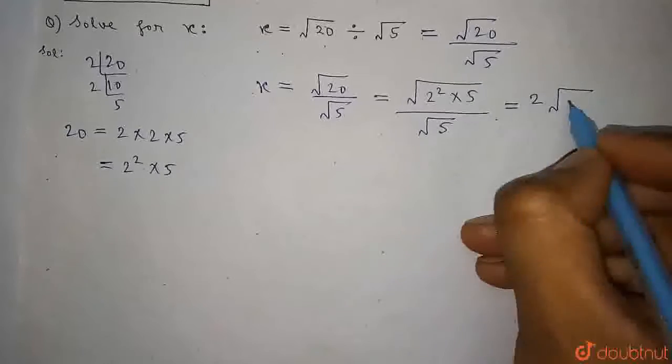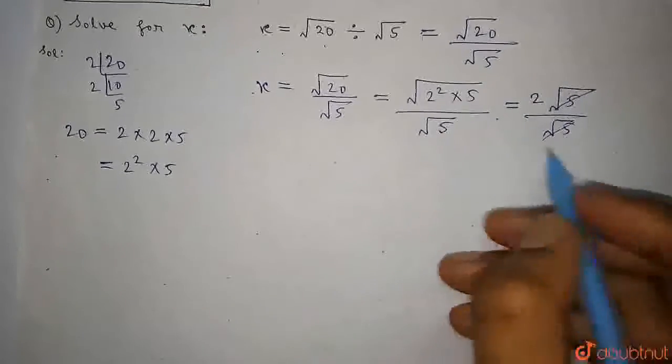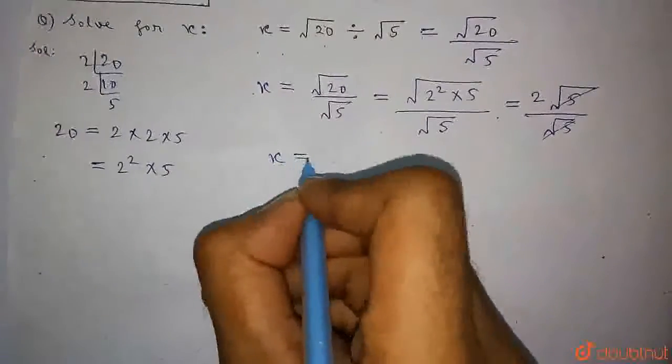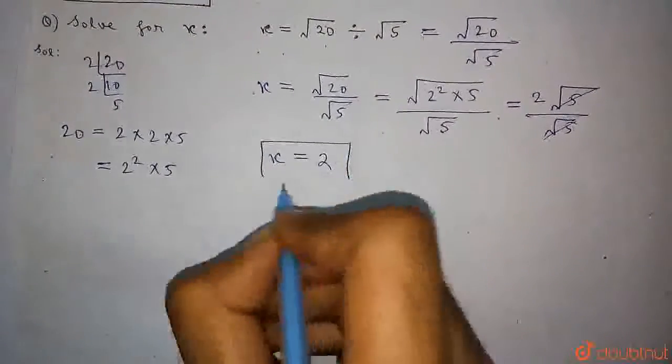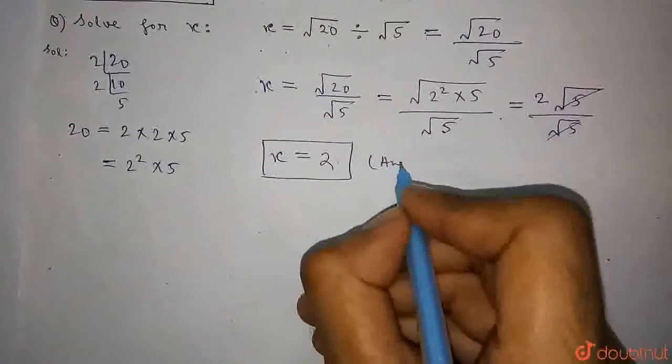So 2 into √5, whole divided by √5. So √5 and √5 cancel out and it is only left with x equals 2. So the value of x equals 2, which is the correct answer.